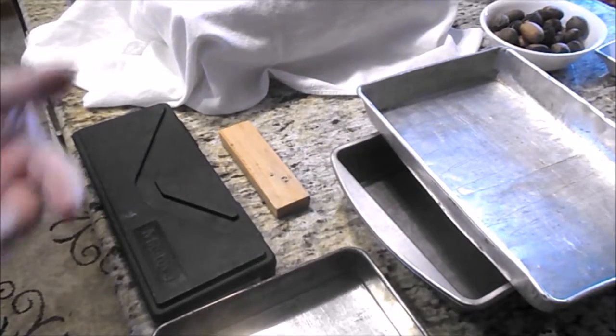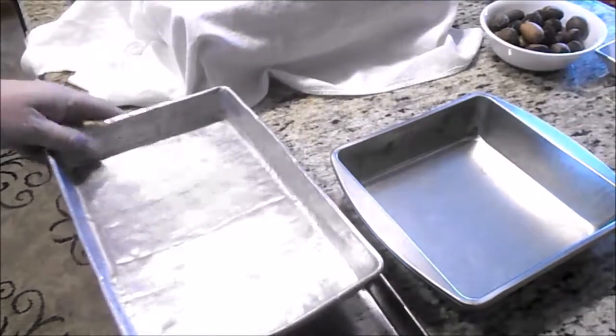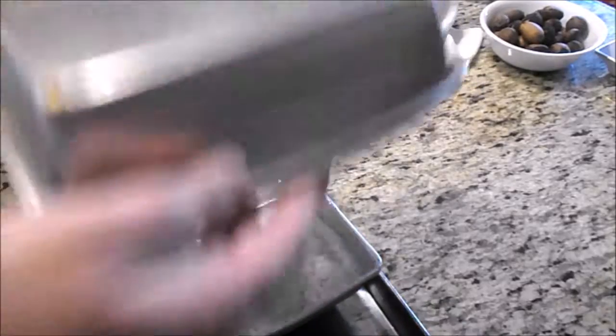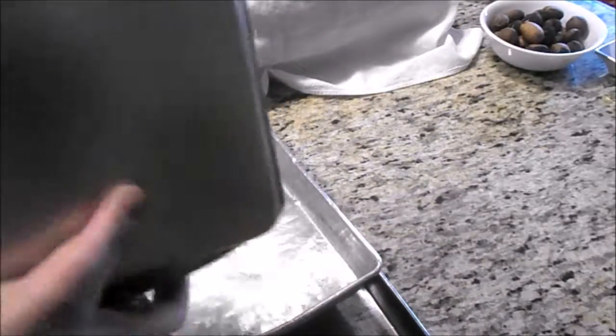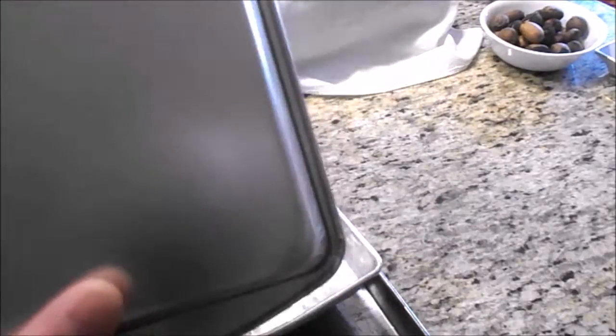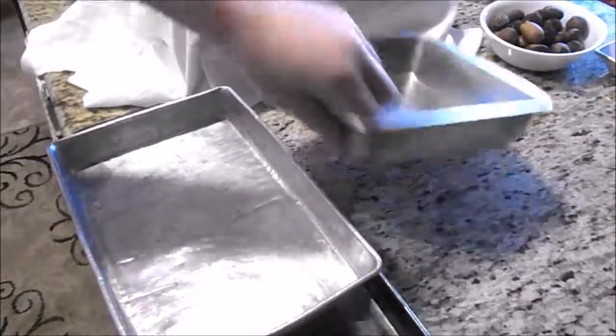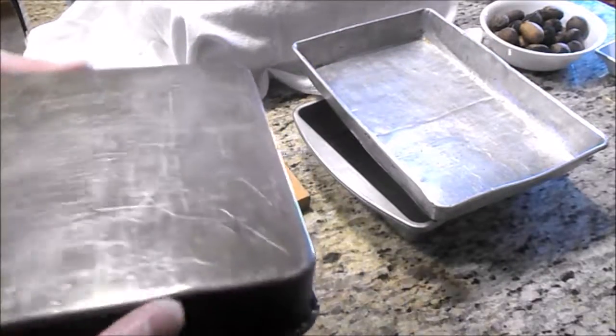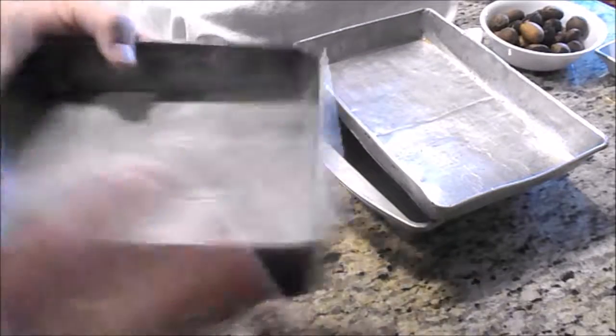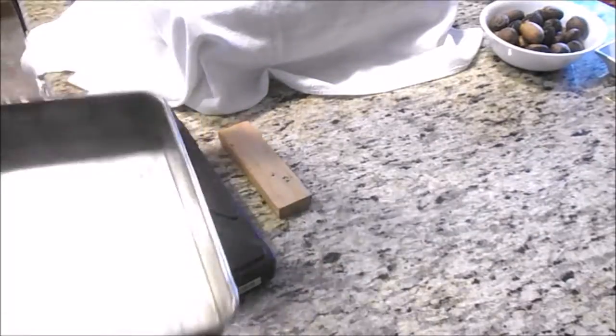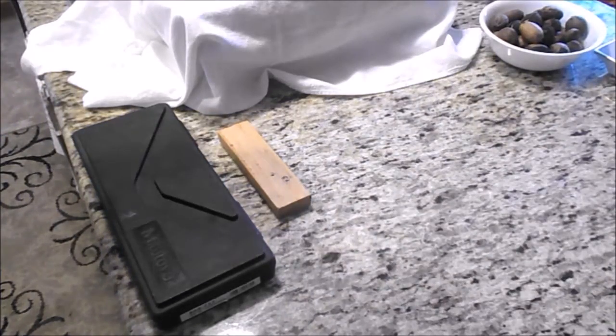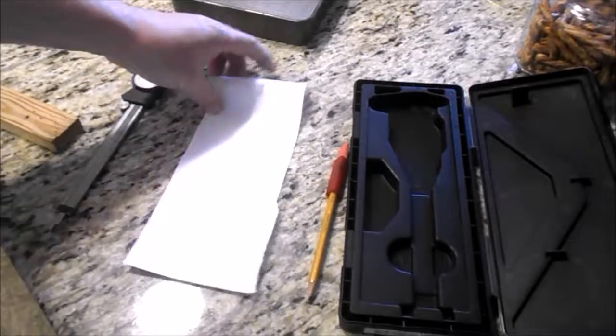The newer baking pans just aren't holding up. It doesn't even say on it what they are. There's rust on the outside. Doesn't say who made them, where they were made, what they made out of, anything. Of course this old pan doesn't either but I actually much prefer this older pan to these newer pans. I might even post this video.